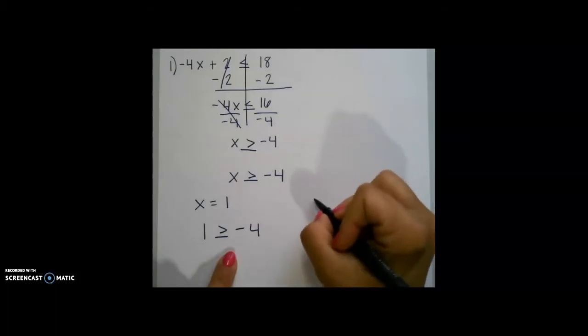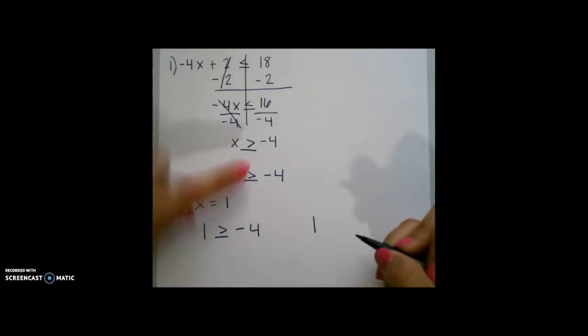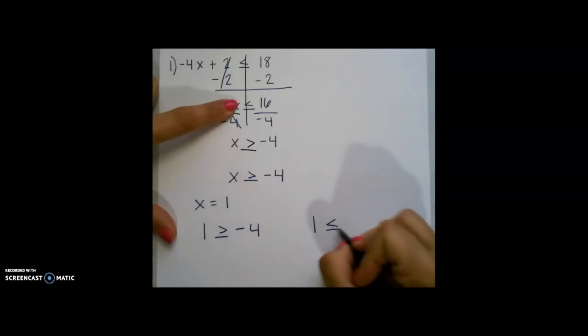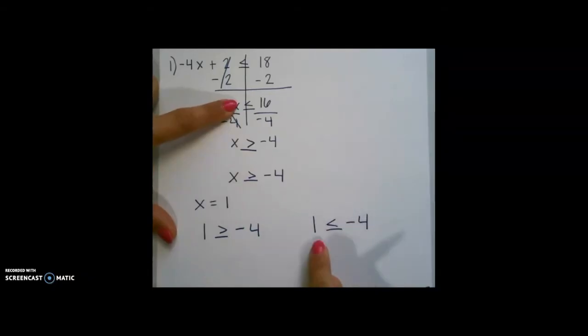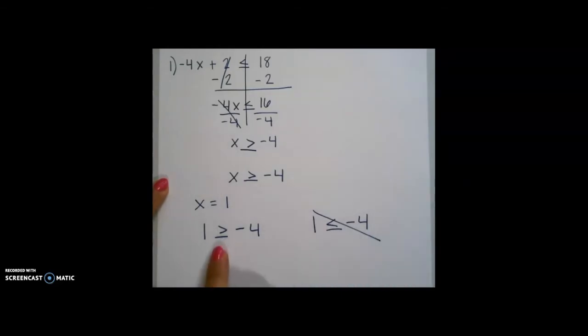If x were equal to positive 1, and I did not flip my sign, 1 is less than or equal to negative 4 is not true. This is why we have to flip our sign to be sure that our inequality will still remain true at the end of our problem.